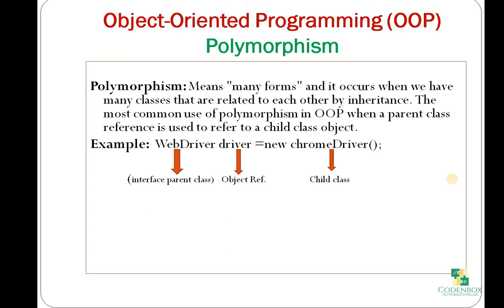Here are a few key points. It's a relationship between many classes following the inheritance concept, so you have to know what inheritance is. Please check my previous tutorial on inheritance if you haven't seen it. There will be two classes — one class will be a parent and another class will be a child. Here is an example: WebDriver is one class and ChromeDriver is another class.